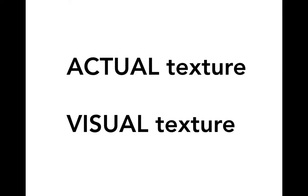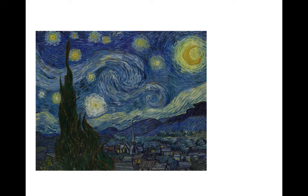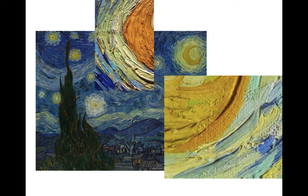That's by Edgar Degas. Someone else who wanted to have actual texture was Vincent van Gogh. In Starry Night, this is definitely a two-dimensional painting — it is in a frame, it is not a sculpture. There's no little church somewhere that he made where you can put your finger on the steeple and feel that it's sharp.